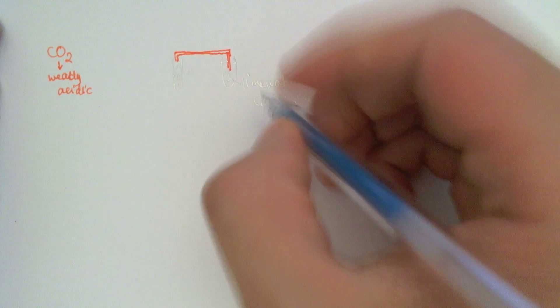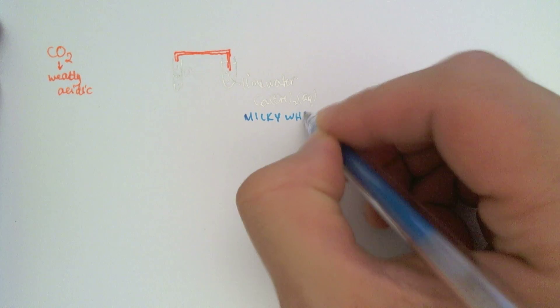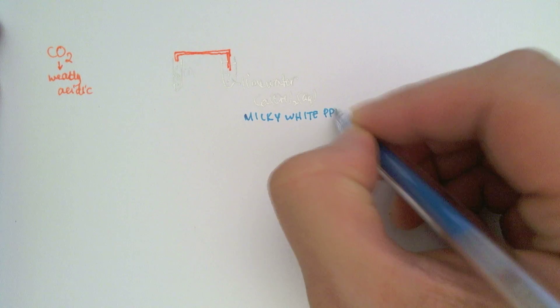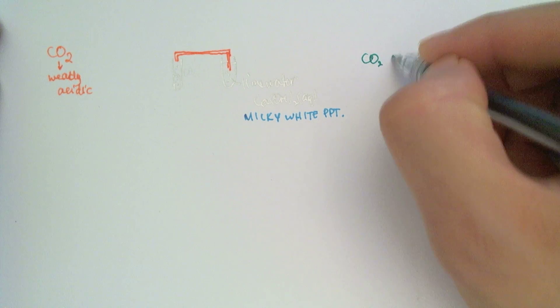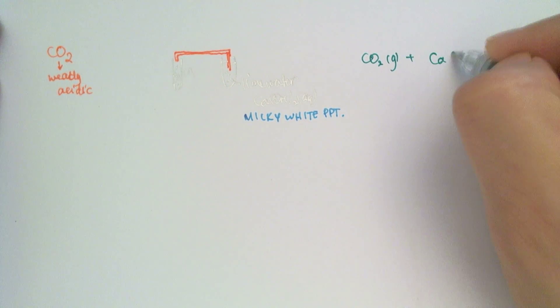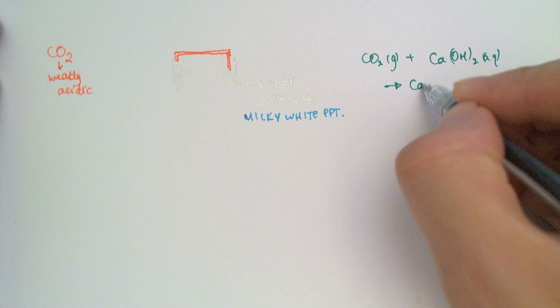So what we'll see is that it will get a milky white precipitate if carbon dioxide was present. So the reaction taking place here is that the carbon dioxide gas is reacting with the lime water to form an insoluble precipitate of calcium carbonate.